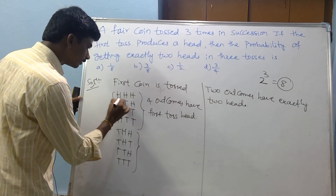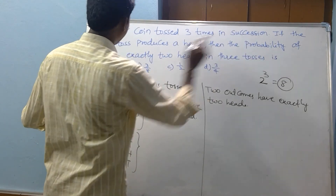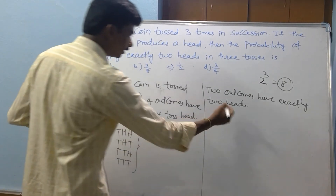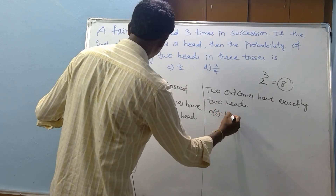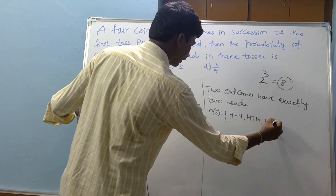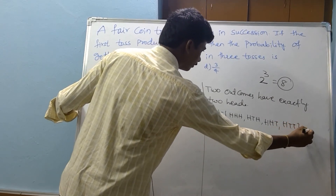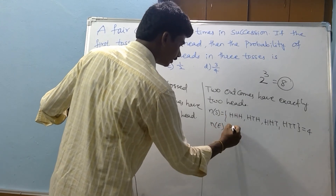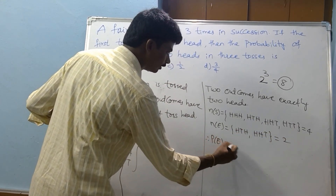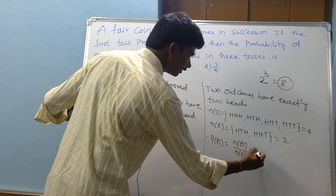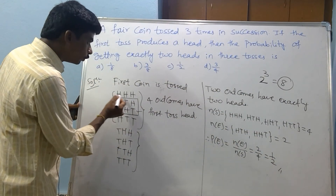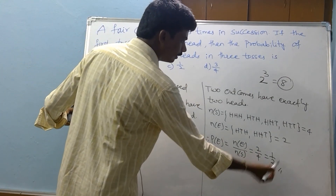Of those four outcomes, two outcomes have exactly two heads. The probability of getting exactly two heads: number of E = 2, number of S = 4. Therefore probability of E = 2 by 4 = 1 by 2. These two outcomes have exactly two heads.